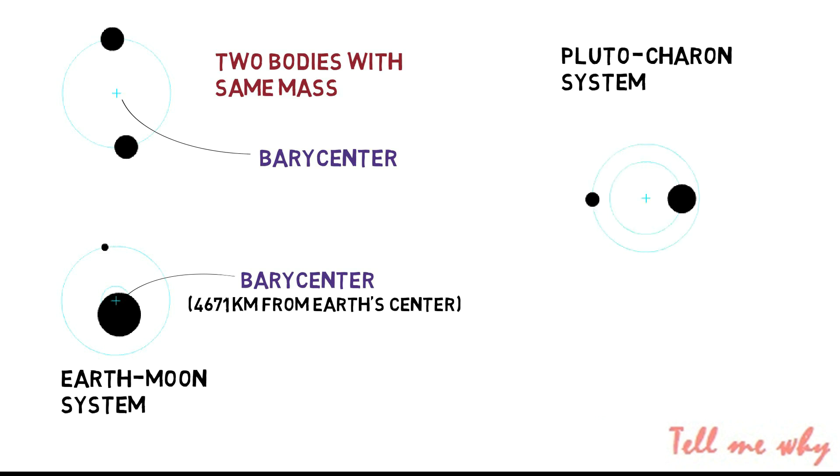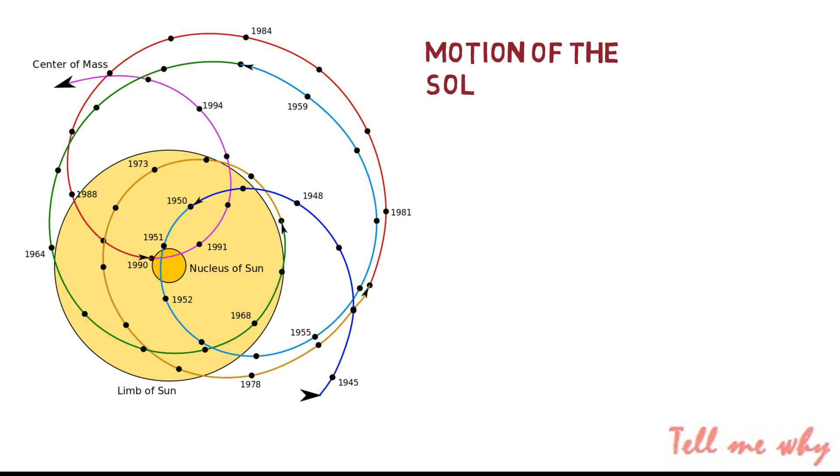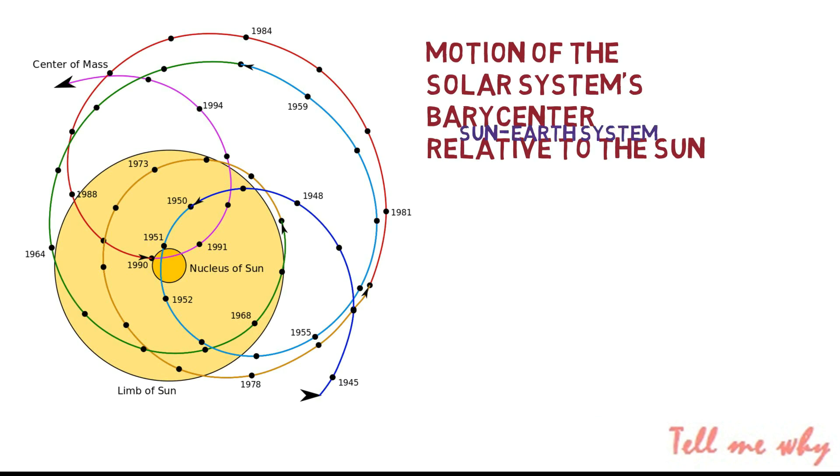What about Pluto and Charon system? Here the case is different, right? In the solar system, the star is so much more massive than the planet that the barycenter is usually within the star. From a distance, it looks like the planet is orbiting the star and the star is wobbling very slightly.